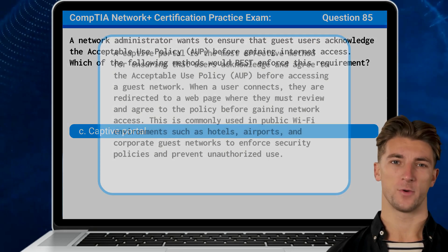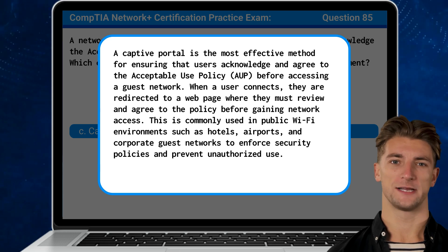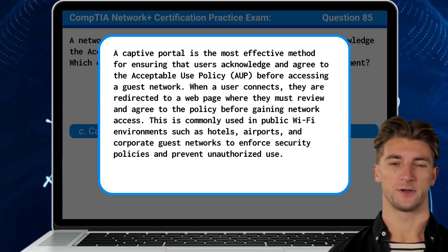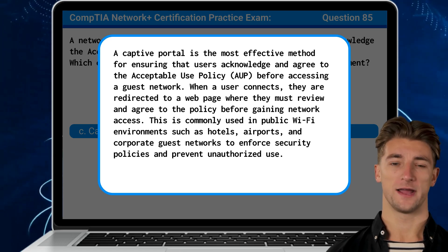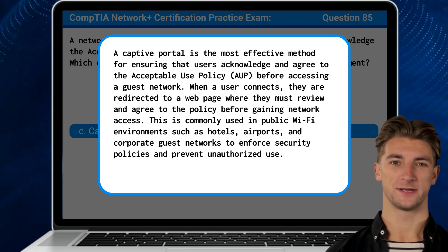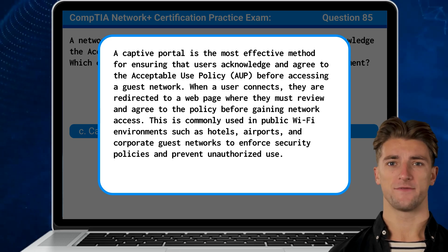A captive portal is the most effective method for ensuring that users acknowledge and agree to the acceptable use policy before accessing a guest network. When a user connects, they are redirected to a web page where they must review and agree to the policy before gaining network access. This is commonly used in public Wi-Fi environments such as hotels, airports, and corporate guest networks to enforce security policies and prevent unauthorized use.